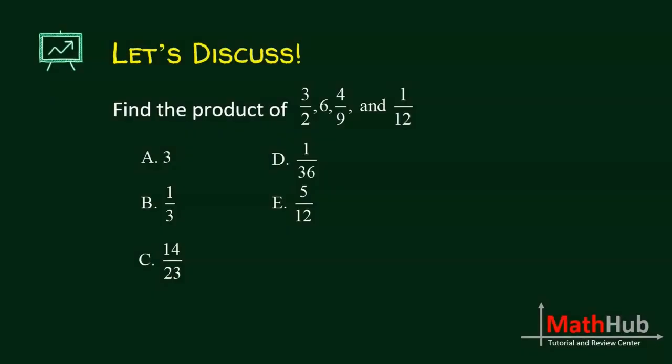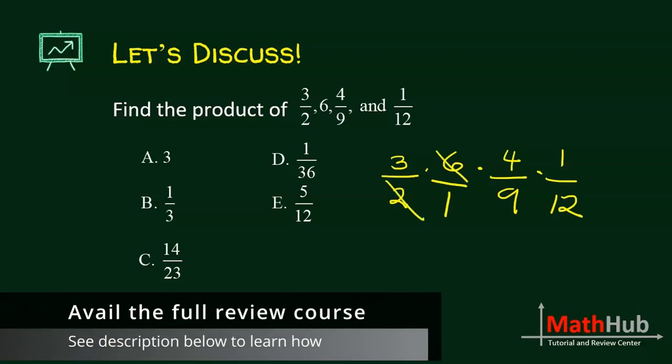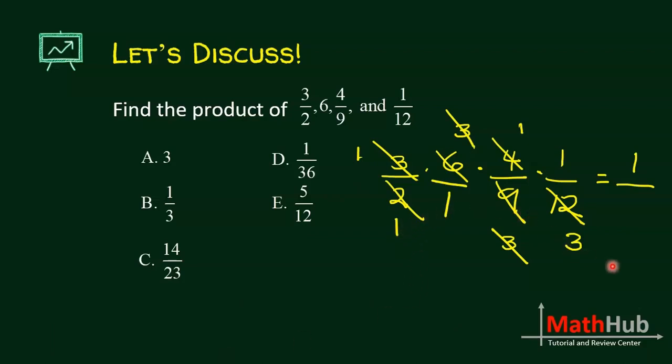Find the product of 3 halves times 6 times 4 over 9 times 1 over 12. If there is no denominator, that means it's 1. 6 and 2 divisible by 2, becomes 1 and 3. 3 and 9 becomes 1 and 3. 4 and 12 divisible by 4 becomes 1 and 3. I have 3 in the numerator and 3 in the denominator, it gets cancelled out. We're left with just 1 over 1 times 3. The answer is letter B.